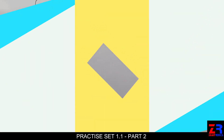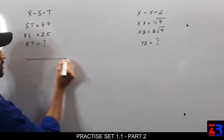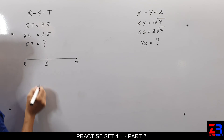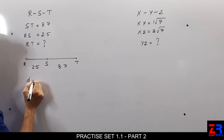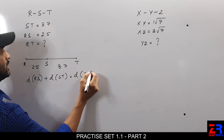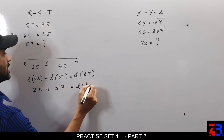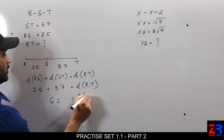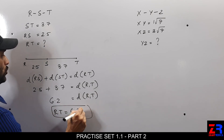Sub-question 2 of question number 6: R–S–T. RS is 2.5 and ST is 3.7. We are supposed to find RT. Distance RS plus distance ST equals distance RT. So 2.5 plus 3.7 equals distance RT, therefore RT is equal to 6.2 units.